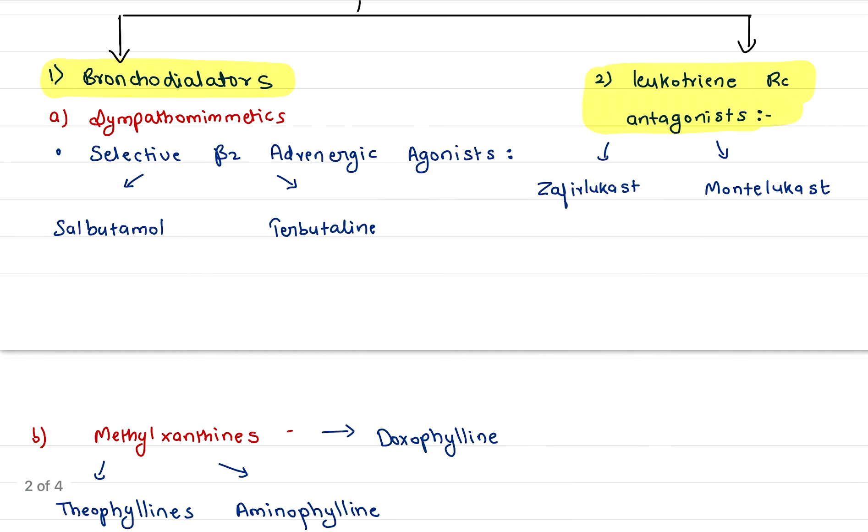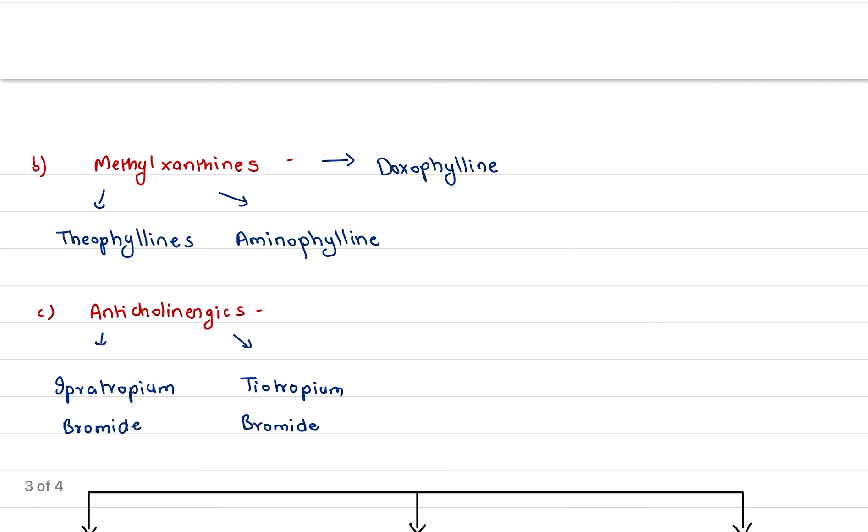Under bronchodilators, we have sympathomimetics, methylxanthines, and anticholinergics. Sympathomimetics include selective beta-2 adrenergic agonists, with two drugs: salbutamol and terbutaline. Methylxanthines include theophylline, aminophylline, and doxofylline.